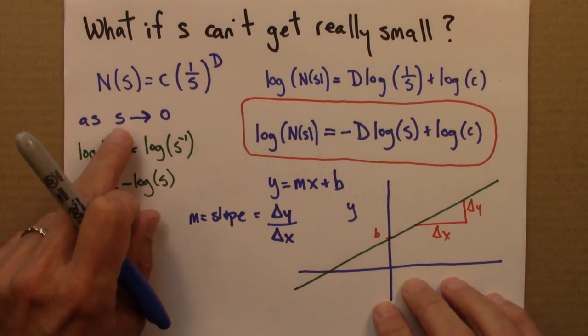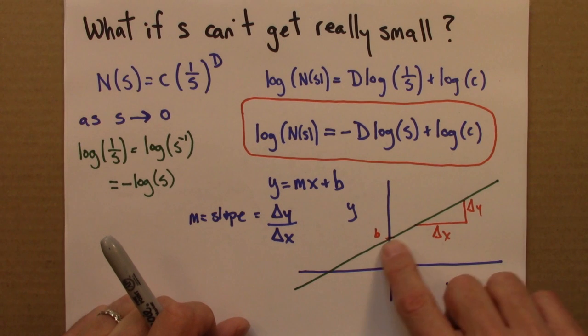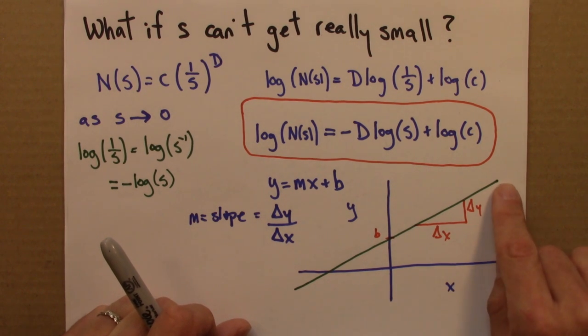So this gives us a way of seeing what happens in a nice picture. We can do a little bit of geometry with it as s gets smaller and smaller and smaller, and we can see if we're seeing linear behavior like this.